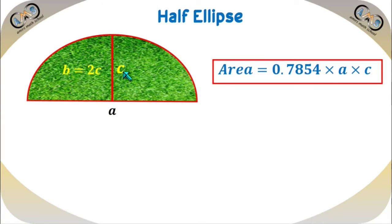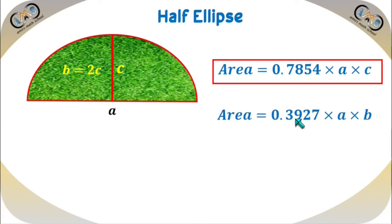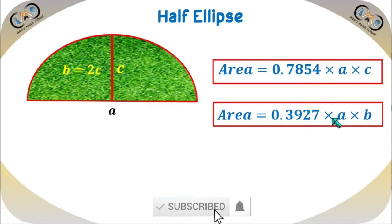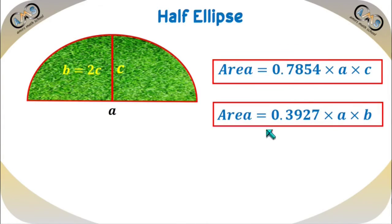If we take B equal to 2C, that is double the value of C, then the formula becomes 0.3927 times A times B. That is, if we double C and consider that value as B, we use the formula 0.3927 times A times B. But the formula 0.7854 times A times C is easier to apply, so we just use that one.